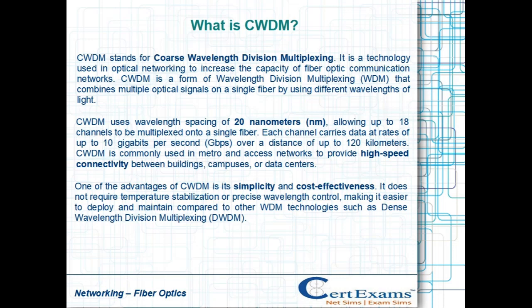CWDM uses wavelength spacing of 20 nanometers (nm), allowing up to 18 channels to be multiplexed onto a single fiber. Each channel carries data at rates of up to 10 gigabits per second (Gbps) over a distance of up to 120 kilometers.